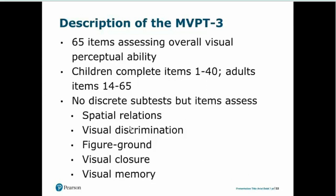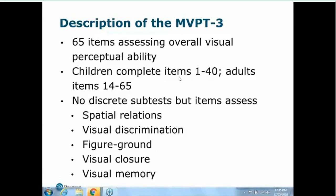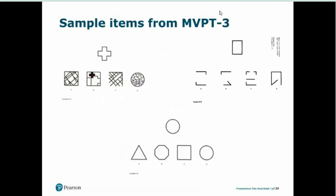Depending on age, different items are administered. Children start at item 1 and complete items 1 to 40, while adults start at item 14 and go through to the final item. The sample items include figure ground, form constancy, visual closure, and visual discrimination items — all presented as individual choices for the person to select from.